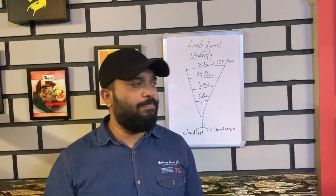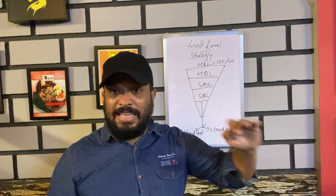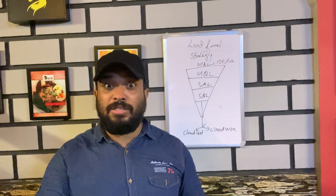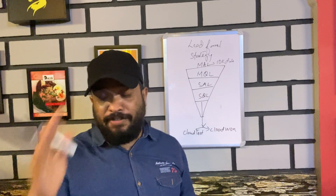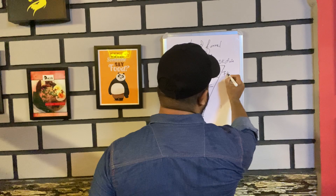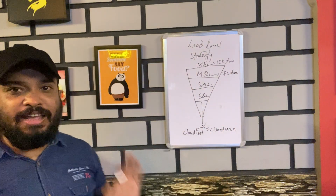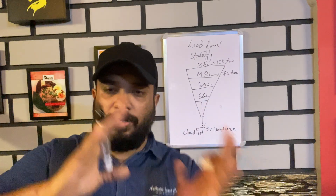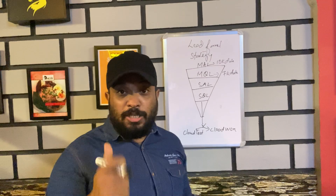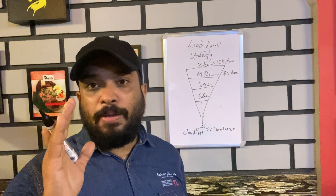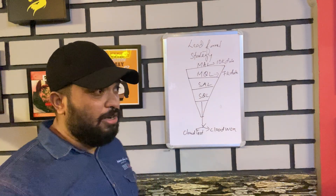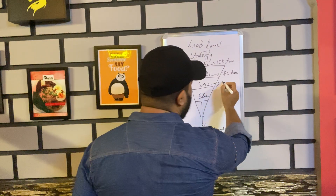Let's say in MAL we have around 10,000 data — from every source. We have to qualify that data. Some phone numbers are not working, some people are not interested, maybe they don't fall into the right demographics. After qualifying, let's say we are left with only 7,000. We then transfer that entire information to our sales team, because they are the ones who determine whether these people forwarded from the marketing team are actually going to buy our products or services.